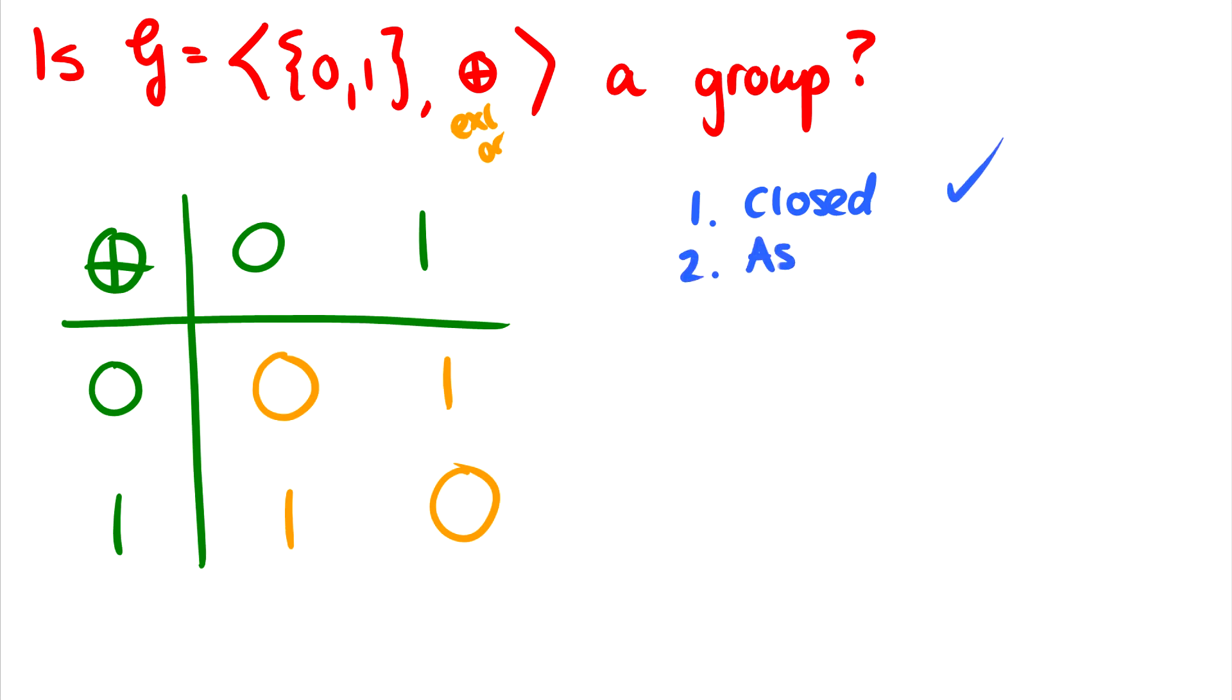Two, is it associative? You can check it yourself, but I'll do one example here. So if we take 1 exclusive or... I'm going to write it with a different symbol just for the thickness of this pen. Is this equal to (1 XOR 0) XOR 0? So we can check these individually. Well, 1 XOR 0 is just 1 XOR 0.